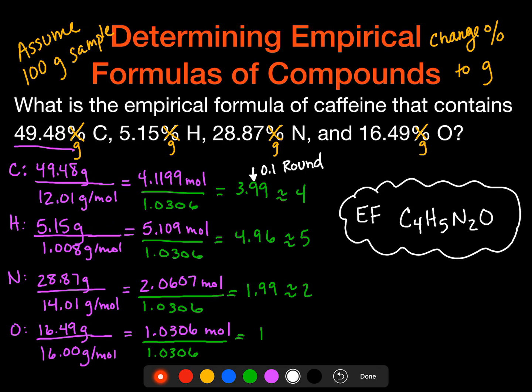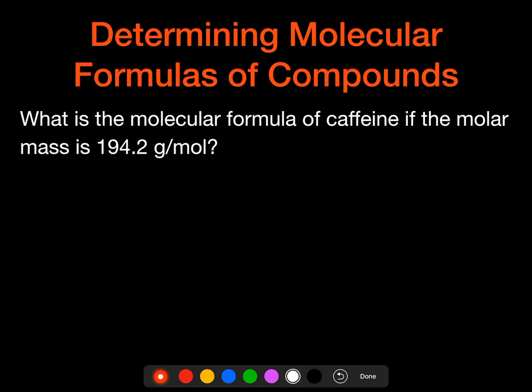Now, we're going to take that empirical formula, and we're going to do the next step with it, which is to determine the molecular formula for caffeine. But in order to do that, we have to know what the molar mass is. So in this case, we're given the molar mass. And so we have to first find the empirical formula mass. So let's go back and find that empirical formula again. The empirical formula was C4H5N2O. And we want to know the mass of this.